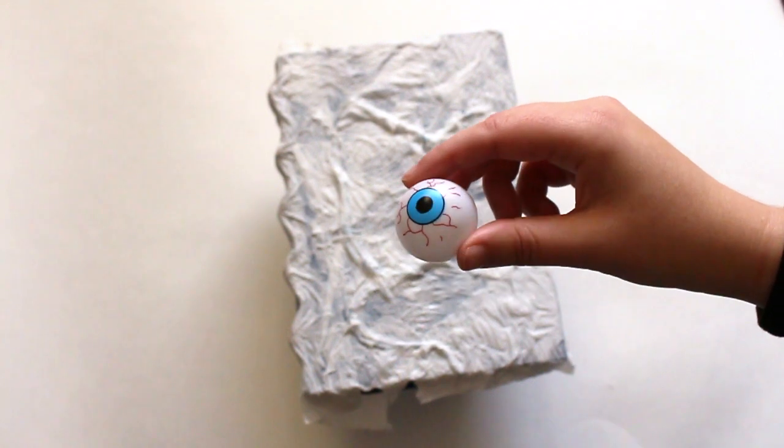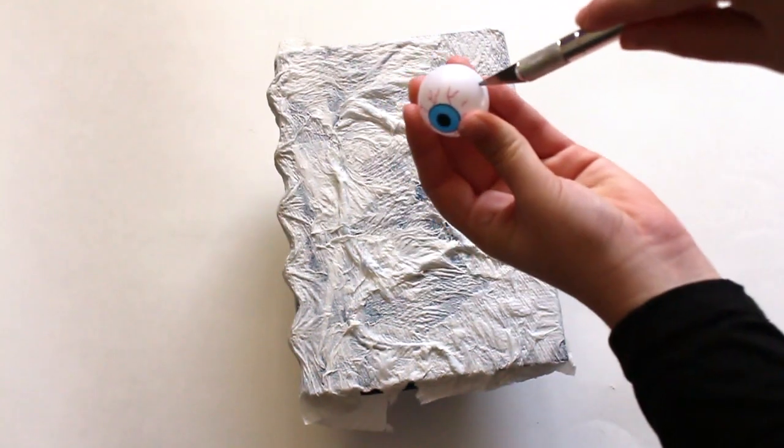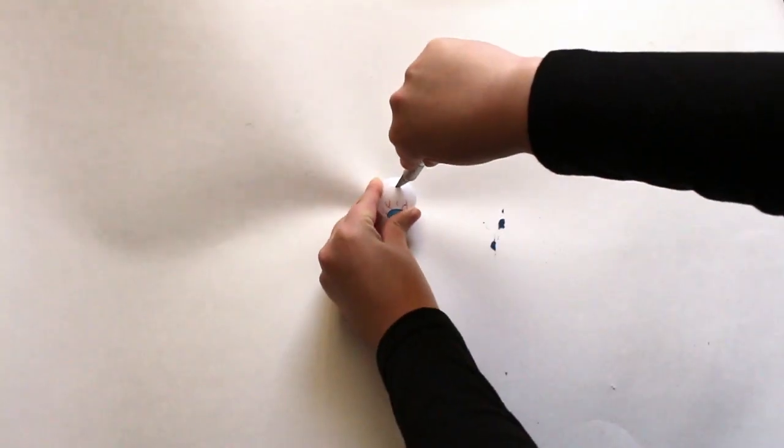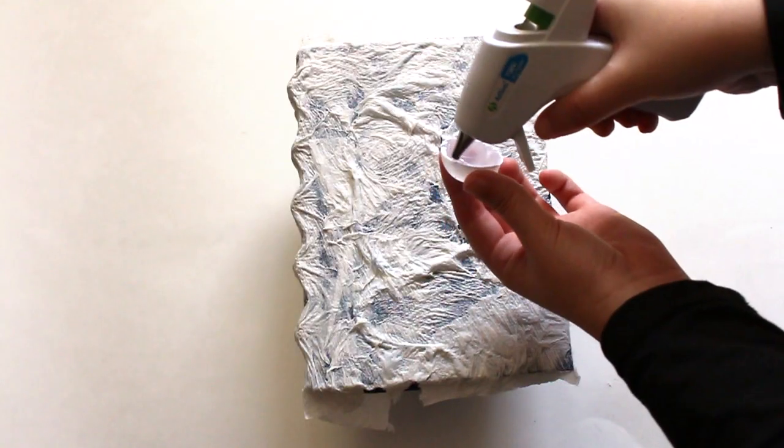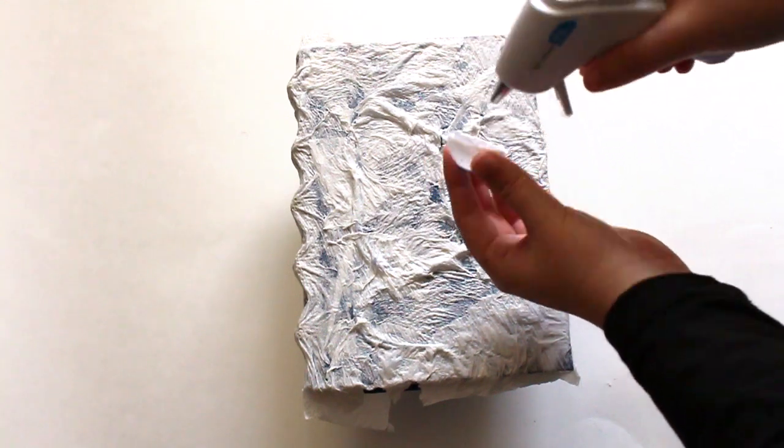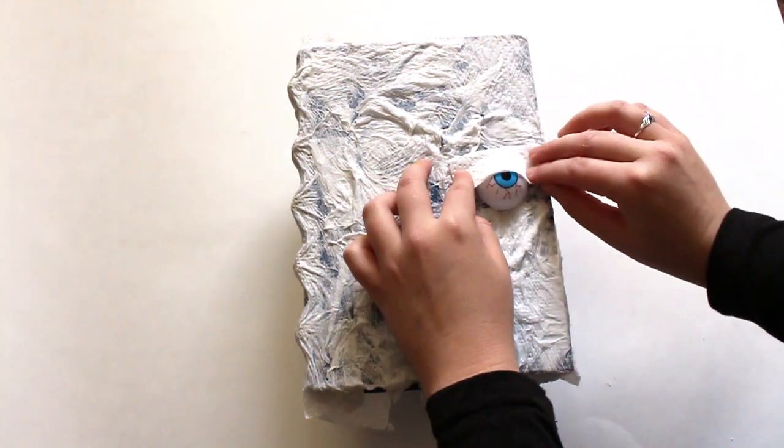Cut one of the ping pong eyeballs in half. This was quite difficult to do, so be very careful. You may want to consider using clay and painting the eye instead. Once the eye is hot glued down, add a couple layers of folded paper towel to create the lid of the eye.